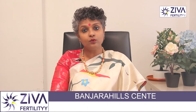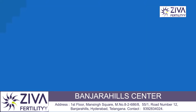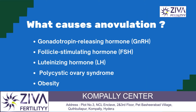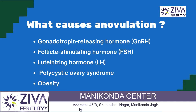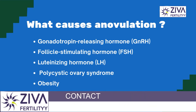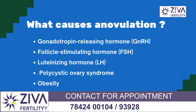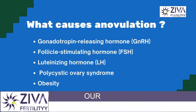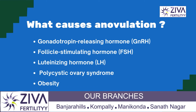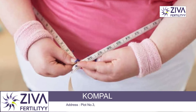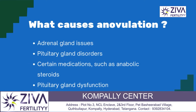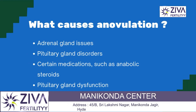What causes anovulation? In general, the cause of anovulation is an imbalance of one or more certain hormones, especially the hormones involved in ovulation, which include gonadotrophin-releasing hormone (GnRH), follicle-stimulating hormone (FSH), and luteinizing hormone (LH). Other causes include polycystic ovarian syndrome, obesity, adrenal gland issues, pituitary gland disorders such as Cushing syndrome or acromegaly, and certain medications such as anabolic steroids.